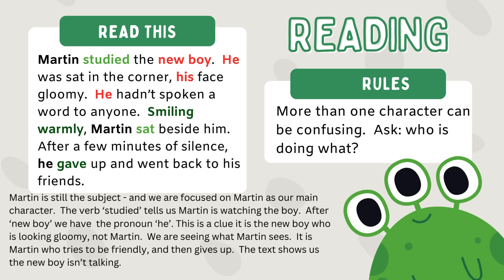'After a few minutes of silence, he gave up and went back to his friends.' We know the new boy hasn't spoken to anybody, so we know he doesn't have friends yet. He gave up — well, who was making the effort? Martin. So after a few minutes of silence, it's Martin that gave up and Martin that went back to his friends. It's very common when reading longer texts, especially older texts or GCSE level texts, that we can get confused about who is doing what, and then it's very easy to write the wrong answer, especially in terms of language analysis. Working out who the pronoun belongs to and who is the subject of the sentence is very important to avoid mistakes.